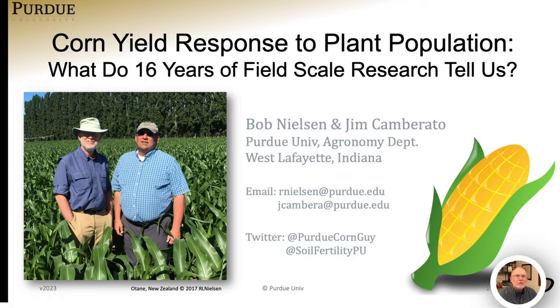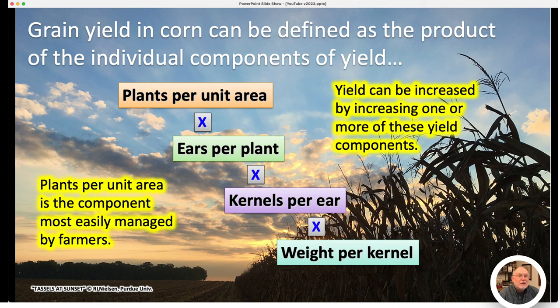Grain yield in corn can be defined as the product of the individual components of yield, which are plants per unit area, number of ears per plant, number of kernels per ear, and weight per kernel. Yield can be increased by increasing one or more of these yield components. Plants per unit area or seeding rate is the yield component that's most easily managed by farmers, thus the interest in choosing a seeding rate and targeting an optimum population.